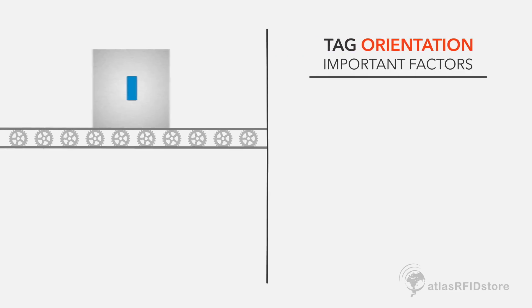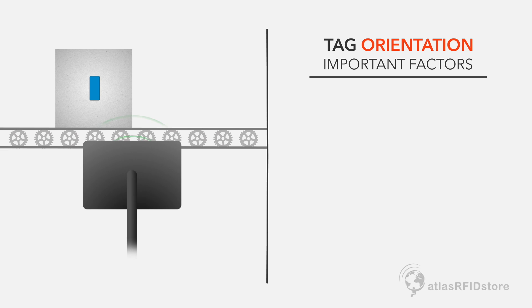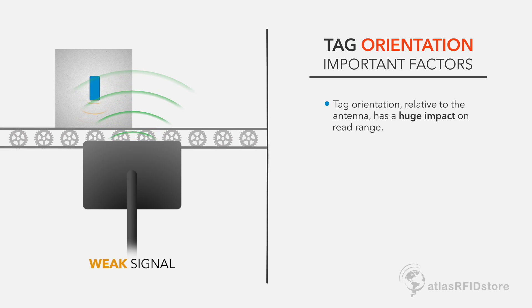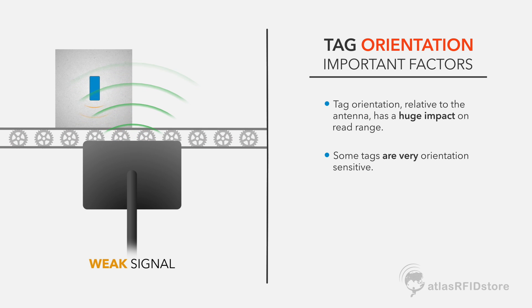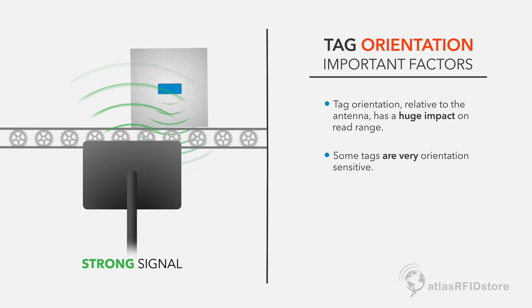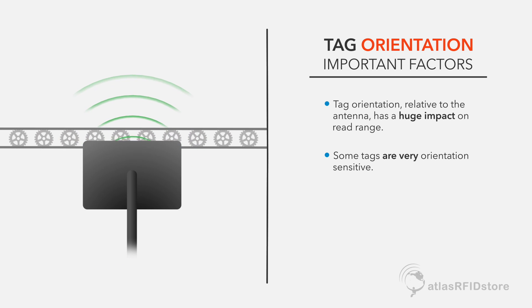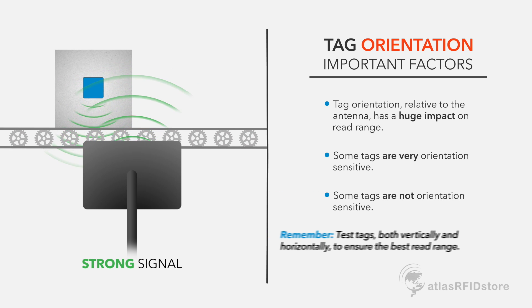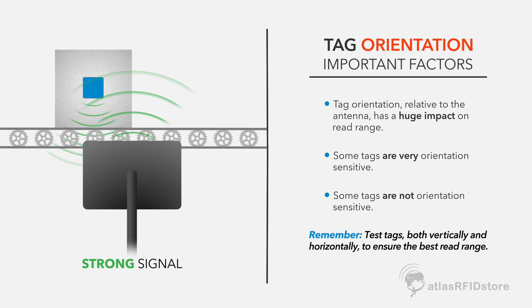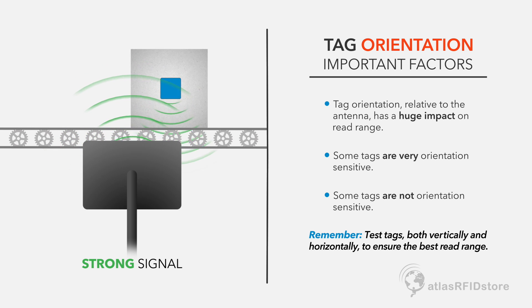The orientation of the tag relative to the antenna that you are using also has a major impact on the read range that you will receive. Some tags are much more orientation sensitive than others, so you will see a significant difference in the read range whether they are placed on your asset vertically or horizontally. Other tags are not as orientation sensitive, so you will receive the same read range whether they are placed on your asset vertically or horizontally.